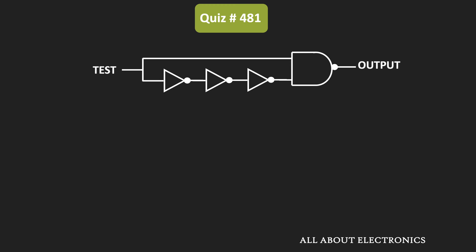Initially, the stage signal is logic low, and then it becomes high and remains in that state. Let's say the propagation delay of each logic gate is equal to tp. As soon as the test signal is applied, one of the inputs to the NAND gate will change immediately. But the second input is applied through three NOT gates, so due to the propagation delay of these three NOT gates, the second input will appear after some delay.